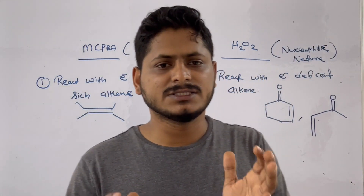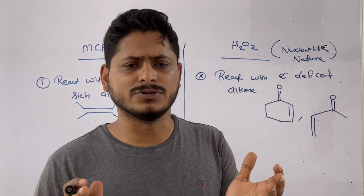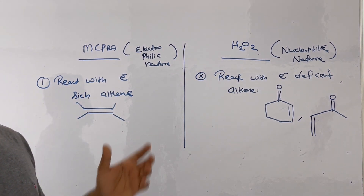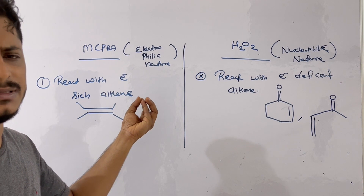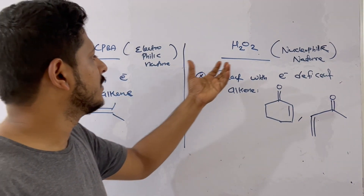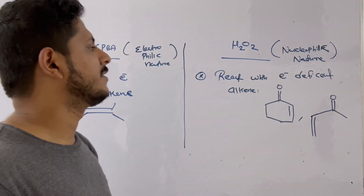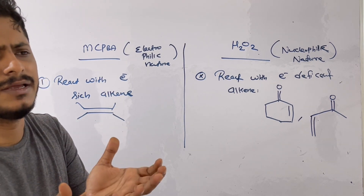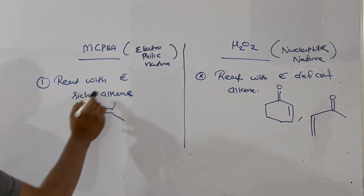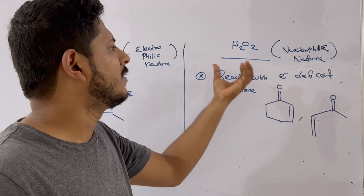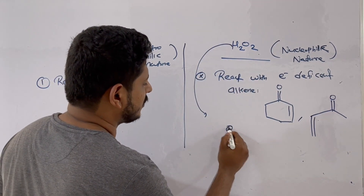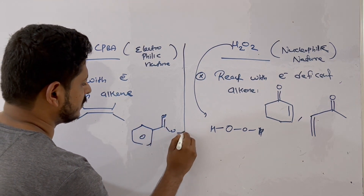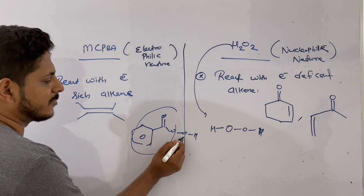Let us discuss the difference between mCPBA and H₂O₂. mCPBA is electrophilic in nature because the peroxide oxygen attached to the acyl/benzene group is highly electron-deficient. Comparatively, H₂O₂ is nucleophilic in nature. Since mCPBA is an electrophilic, electron-deficient species, it will always prefer to react with a more electron-rich alkene.